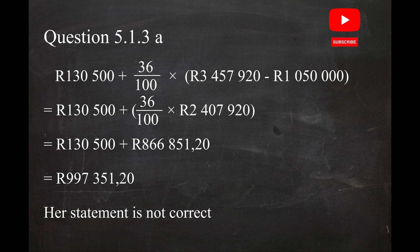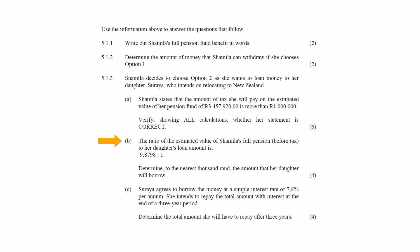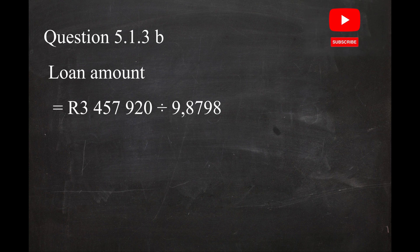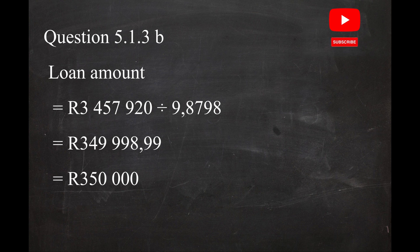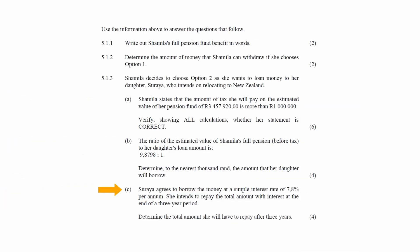In Question 5.1.3b, the ratio of the estimated value of Sharmila's full pension before tax to her daughter's loan amount is 9.8798 to 1. You have to determine, to the nearest thousand rand, the amount that her daughter will borrow. The ratio means the daughter's loan is 9.8798 times smaller than the full pension amount. So the loan amount equals R3,457,920 divided by 9.8798, giving R349,998.99, which rounds to R350,000.